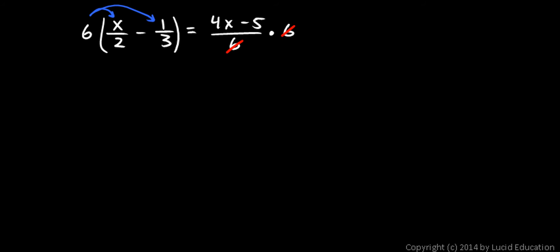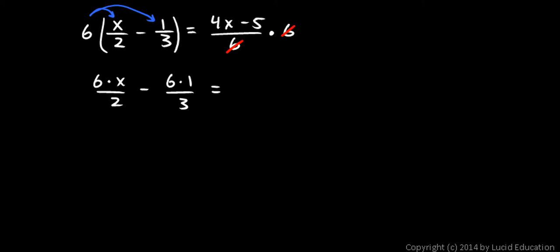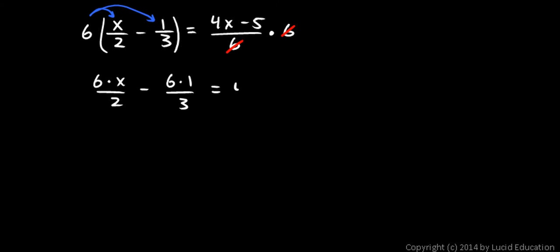So the left side becomes: 6 times x over 2, and 6 times 1 over 3. The 6 has been multiplied by x over 2 and by 1 third, and the minus sign stays in there. On the right side, after those 6's cancel, I'm just left with 4x minus 5.